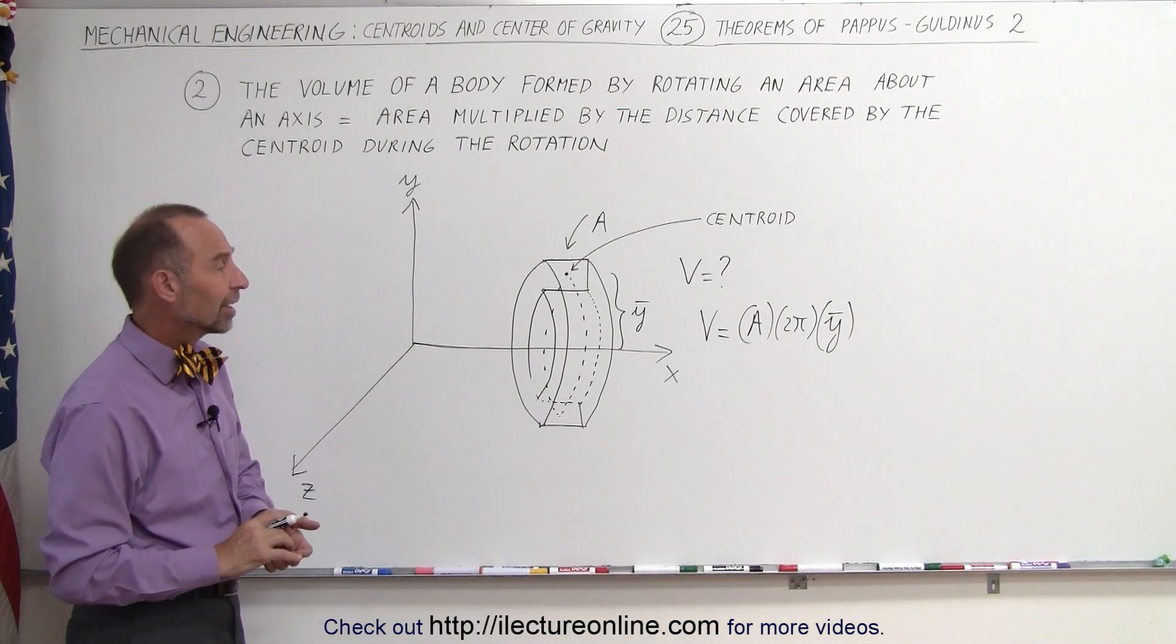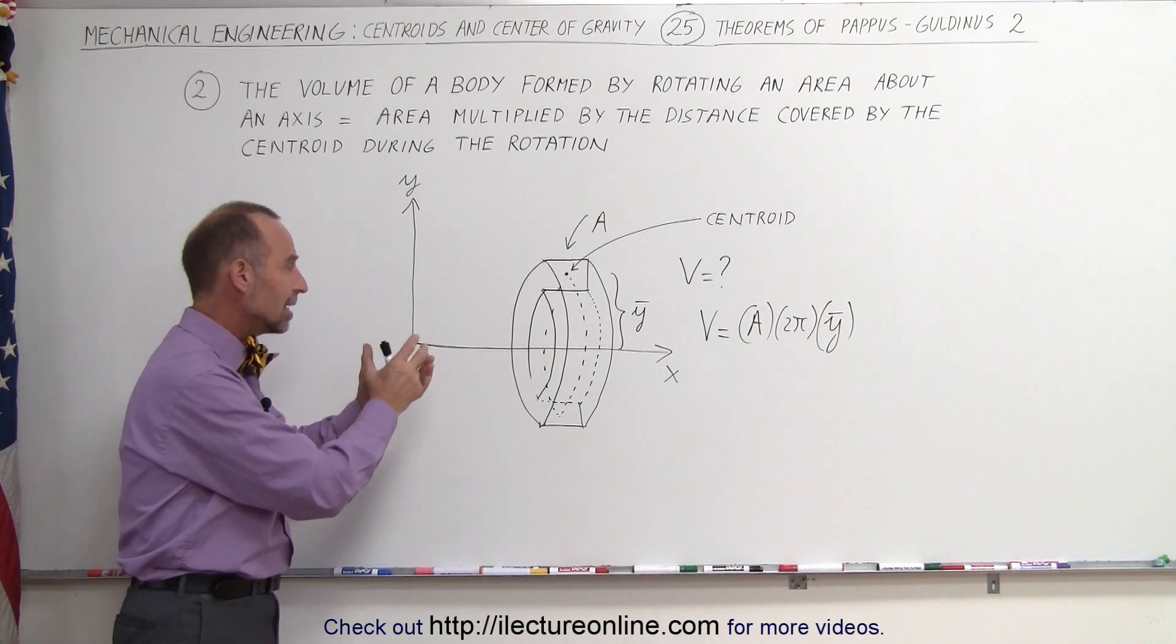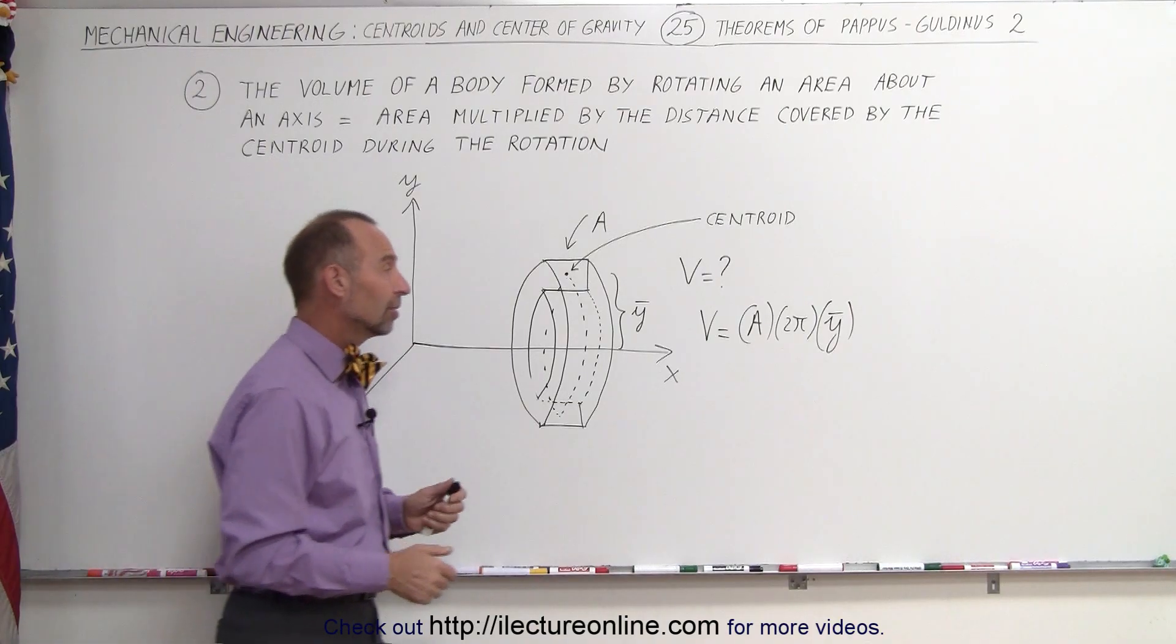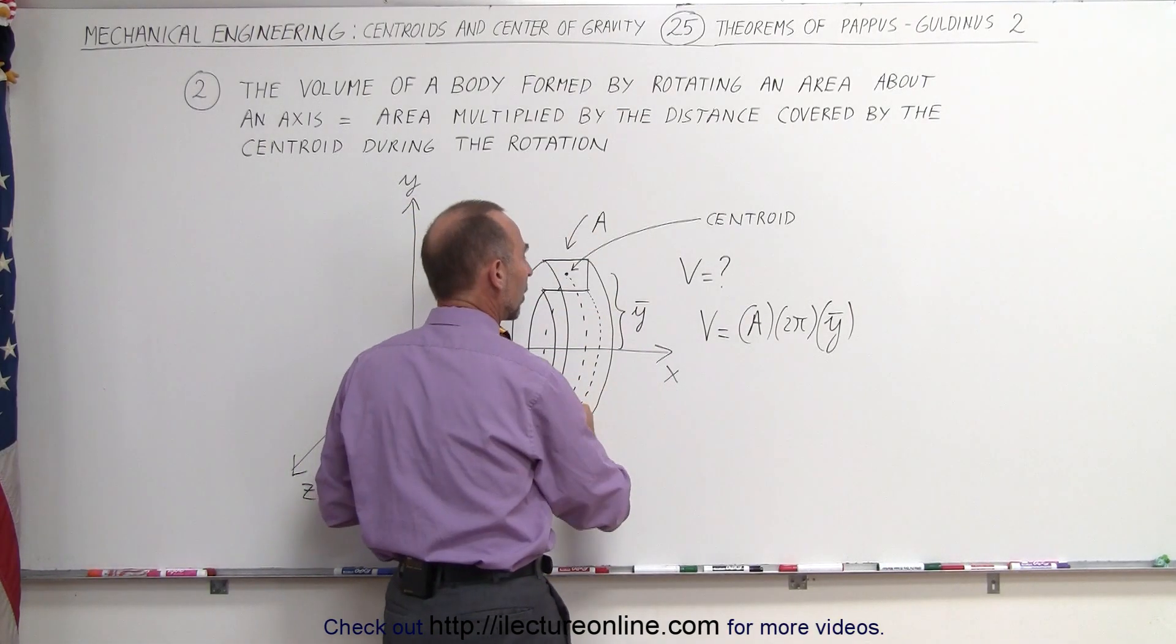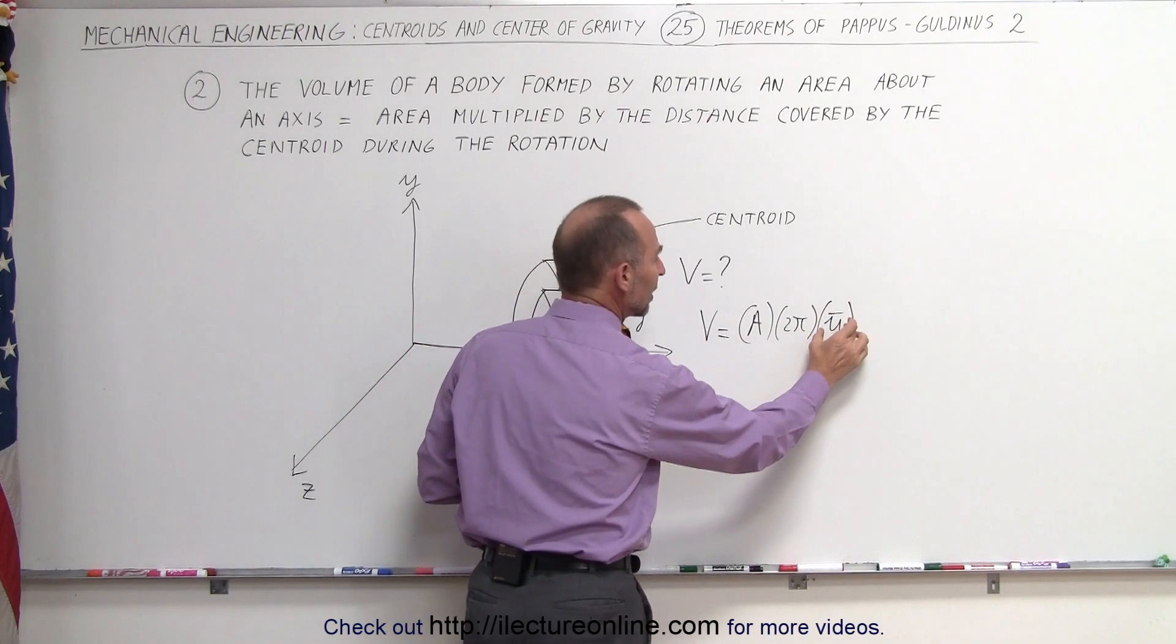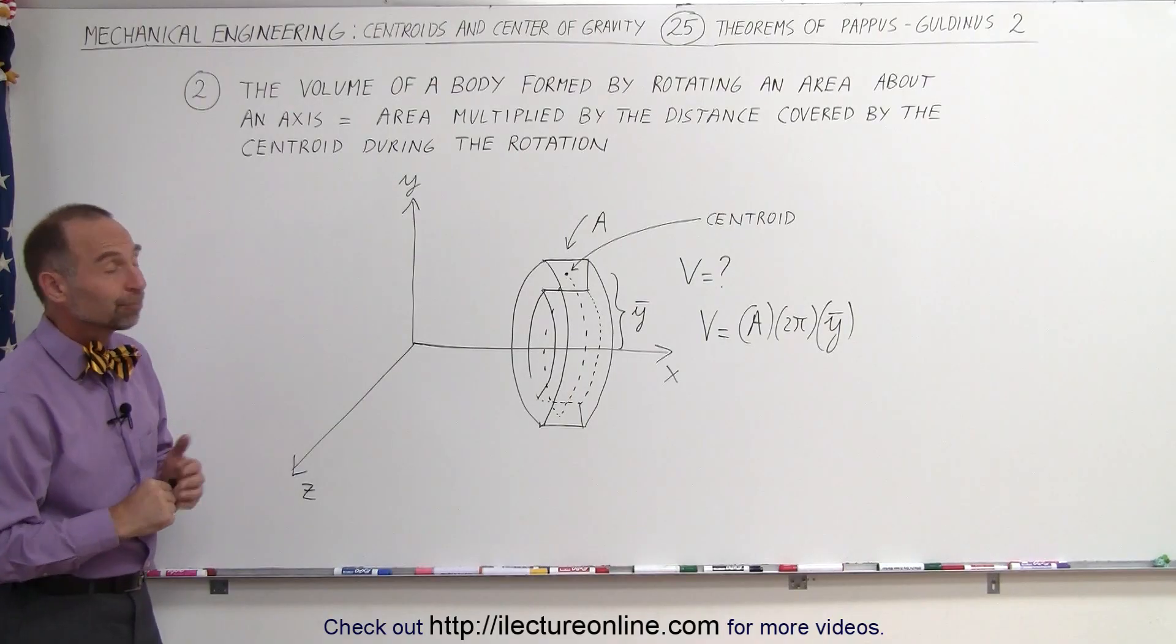Very, very nice technique again. We can use that because the concept of the centroid and how it affects the calculation. Simply the area of the object right here and 2πr which is 2π times the y coordinate of the centroid as we rotate around the x-axis. That's all we need to do.